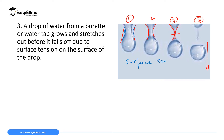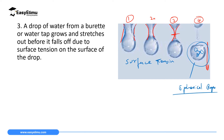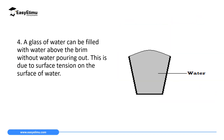After the drop has fallen, it remains in a spherical shape. We discussed in the cohesive and adhesive force lesson that water molecules have a force of attraction between themselves — cohesive force. So after the drop has stretched and been released, it remains in spherical shape because of cohesive force. While it is stretching from the tap it stretches because of surface tension acting on the surface of the drop.